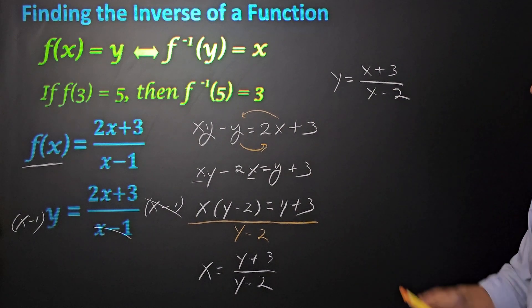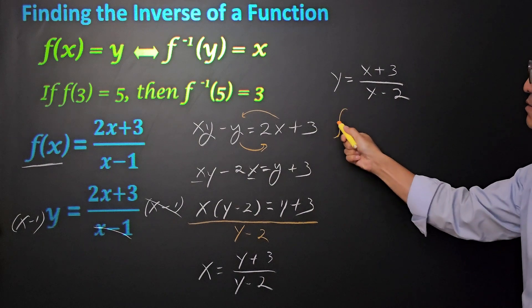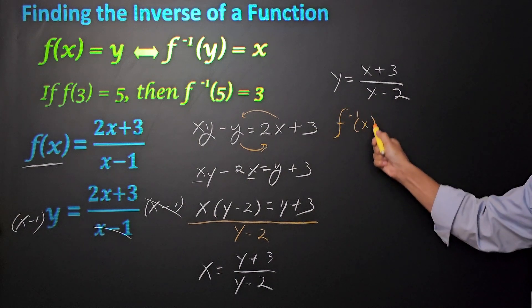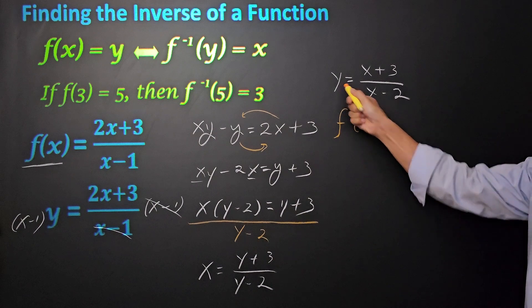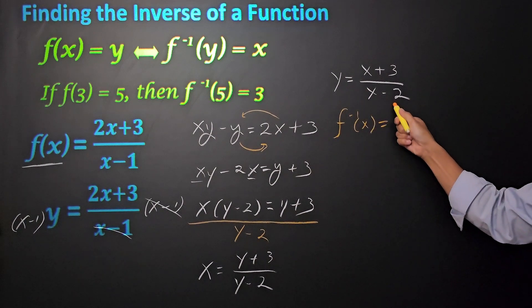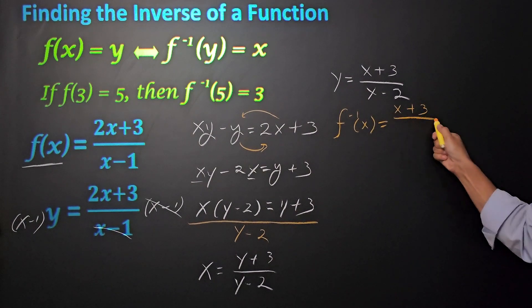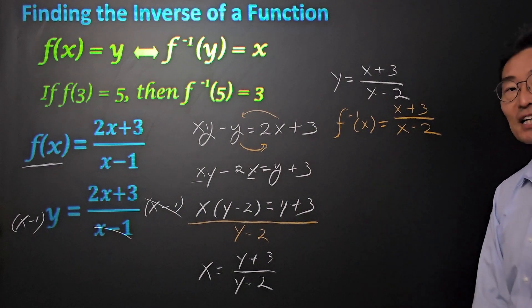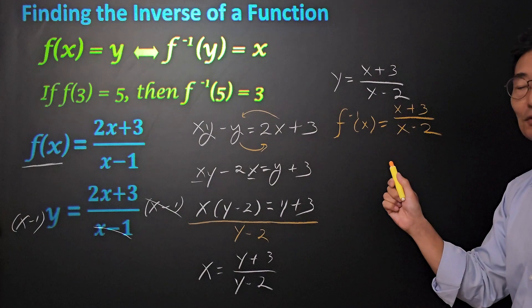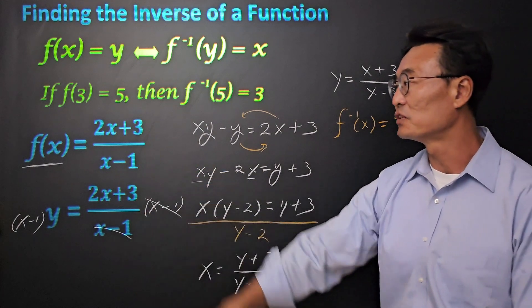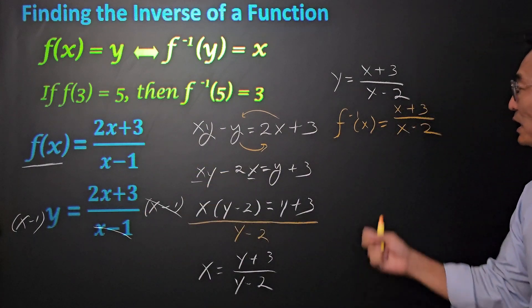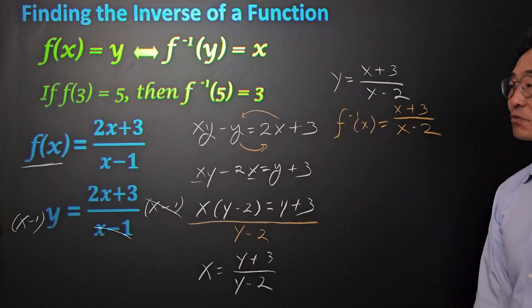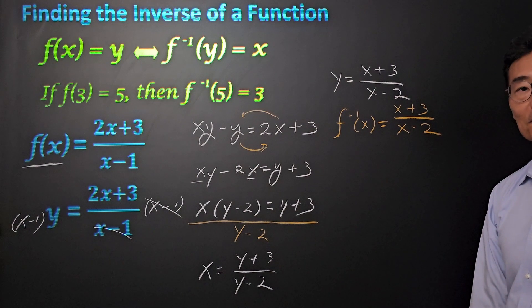Only thing left to do is rewrite this y as f inverse of x instead of the y, equals x plus 3 over x minus 2. So there you go, folks, that's going to be the final answer, meaning given the function 2x plus 3 over x minus 1, the inverse function will be x plus 3 over x minus 2.